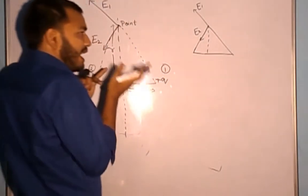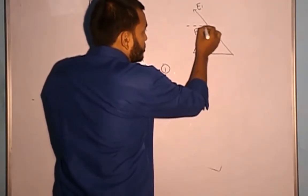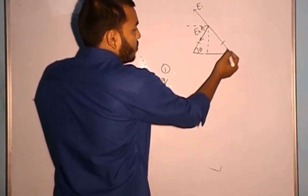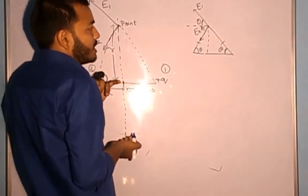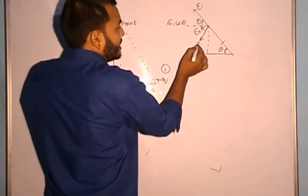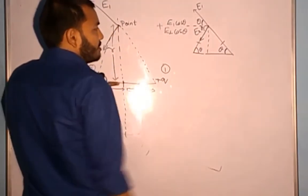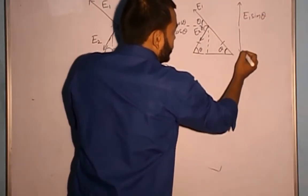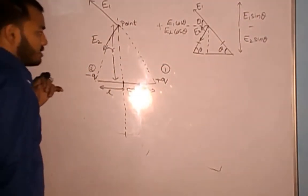Now let's find the components of E1 and E2 and add or subtract them. Let this angle be theta; as alternate angles, the corresponding angle is also theta. The component of E1 in the horizontal direction is E1 cos theta, and that of E2 is E2 cos theta — both in the same direction, so we add them. The vertical components E1 sin theta and E2 sin theta are in opposite directions, so they cancel.